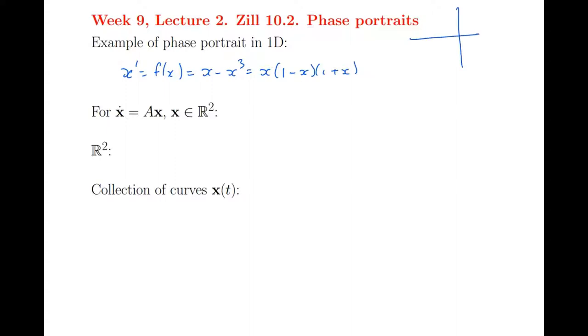And if I graph that function, x minus x cubed, it looks like this. There are three zeros. So the phase portrait is just the real line. And I draw all the orbits on it. There's an orbit at 0, which is just a dot because it's a fixed point. There's an orbit at 1, which is just a dot because it's a fixed point. And minus 1.